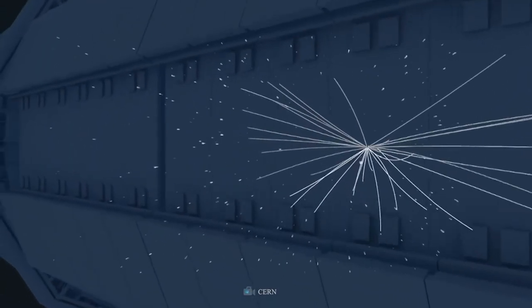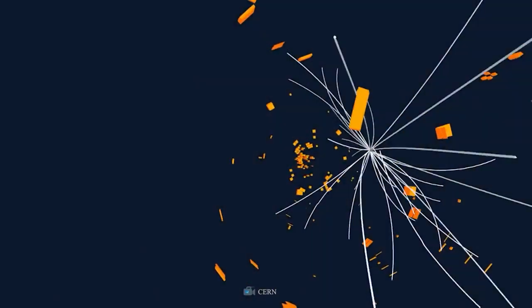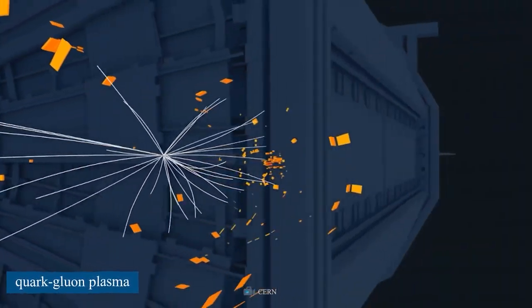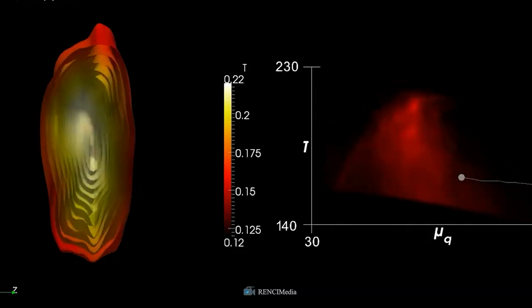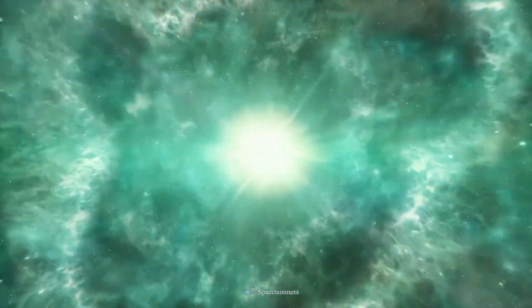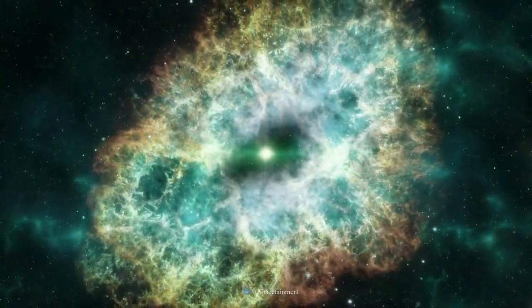Not only will scientists be able to search for candidates of dark matter, but they will also be able to investigate the characteristics of quark-gluon plasma, or QGP, which is a distinct form of matter that is believed to have existed for only 10 microseconds after the Big Bang.